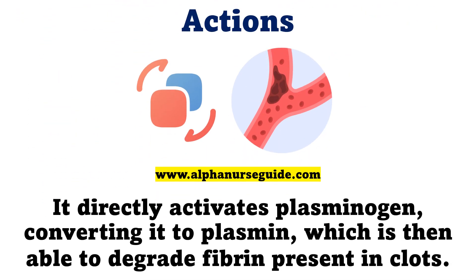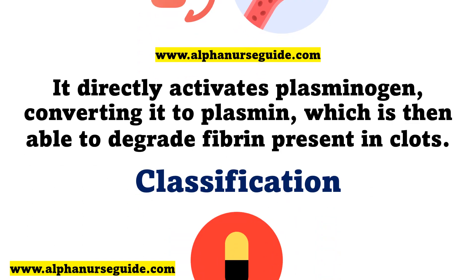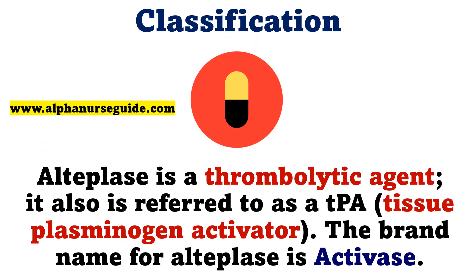Actions. It directly activates plasminogen, converting it to plasmin, which is then able to degrade fibrin present in clots. Classification: Alteplase is a thrombolytic agent, also referred to as a TPA. The brand name for Alteplase is Activase.